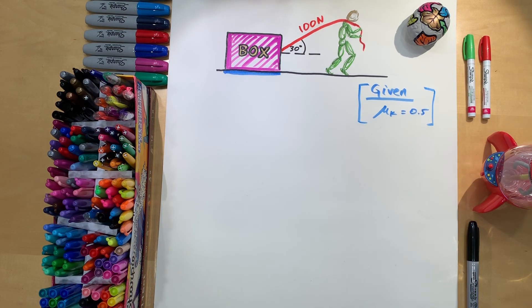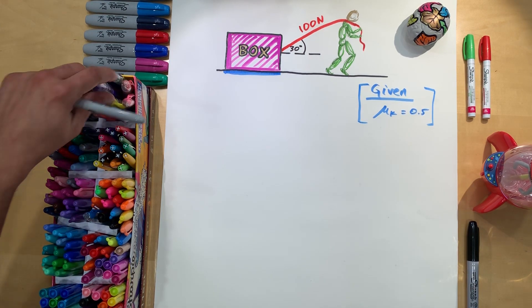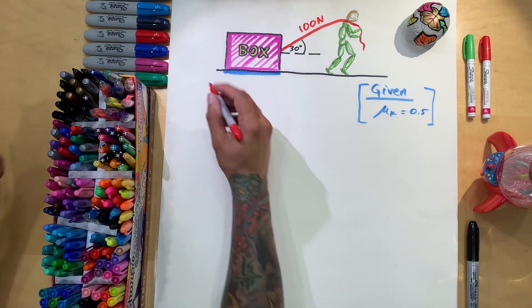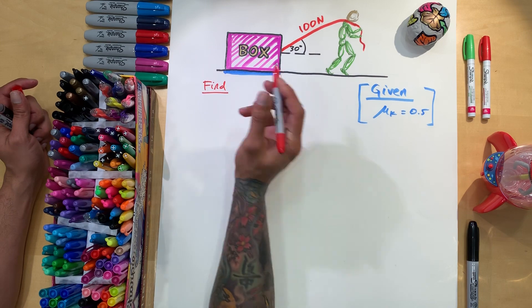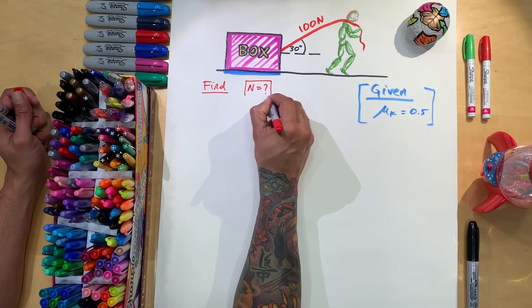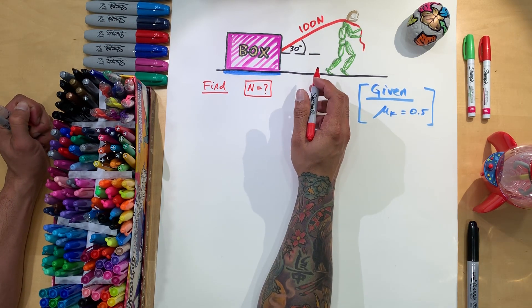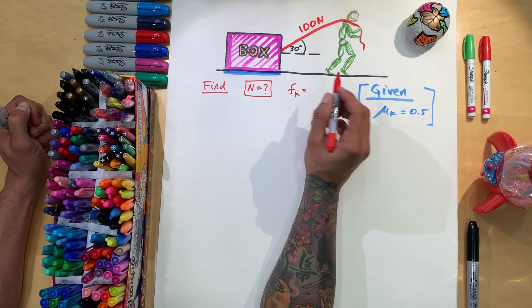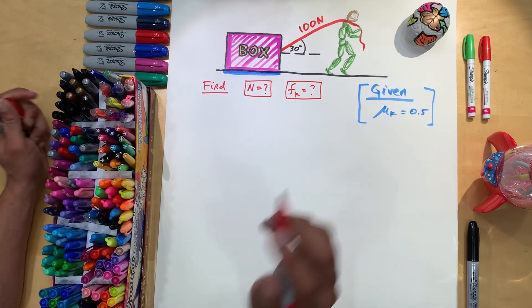First thing you want to do when you have forces, free body diagram. Can't stress that enough. If you do that, then you're like halfway there because that should trigger a lot of things that you need to do for the next parts. So we want to find, what do we want to find? So we want to find the value for the normal. So what is the normal value, the number, and we want to find kinetic friction value.